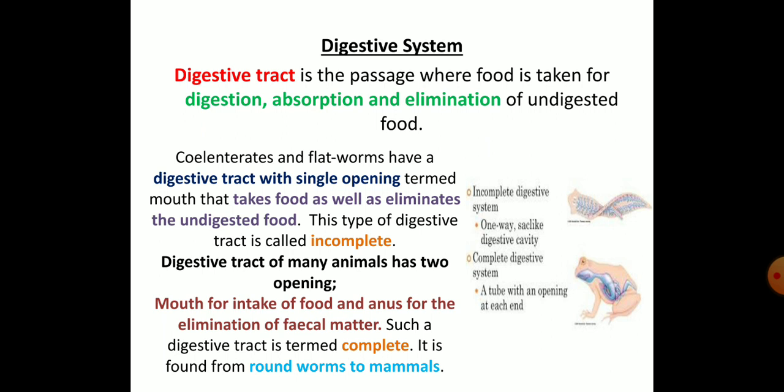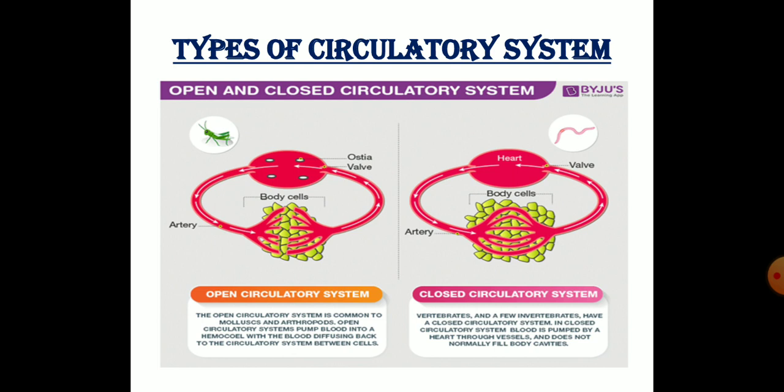Coming to the digestive system: the digestive tract is a passage where digestion, absorption, and elimination of undigested food take place. There are two types — incomplete and complete digestive system. Cnidarians and flatworms have a digestive tract with a single opening (the mouth) for both intake and elimination — this is the incomplete digestive system. Animals with two openings — one for food intake and one for elimination — have a complete digestive system.